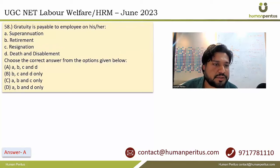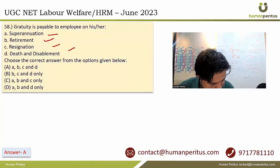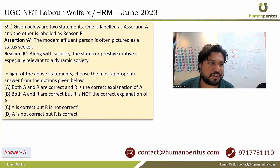Gratuity is payable to an employee on his retirement. All four given conditions apply here, so A, B, C and D is the correct answer, which is option A.